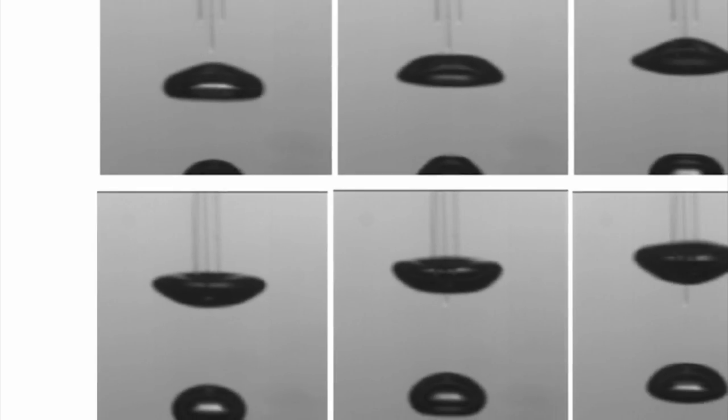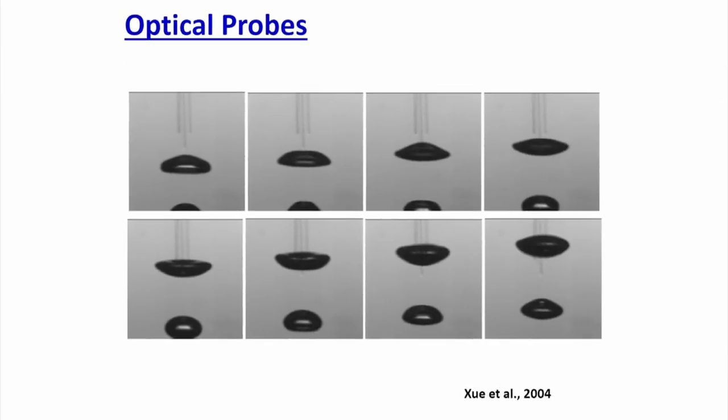Additional limitations of the optical fiber probe include: at high discrete phase fraction (high bubble density), multiple bubbles may approach the probe simultaneously or a second bubble arrives before the first has cleared, giving unclean signals. Also, the probe needle is very thin — if solid fraction is high, solids can break the probe. Despite these limitations, optical fiber probes are more accurate than HWA and are relatively less costly than non-invasive techniques.